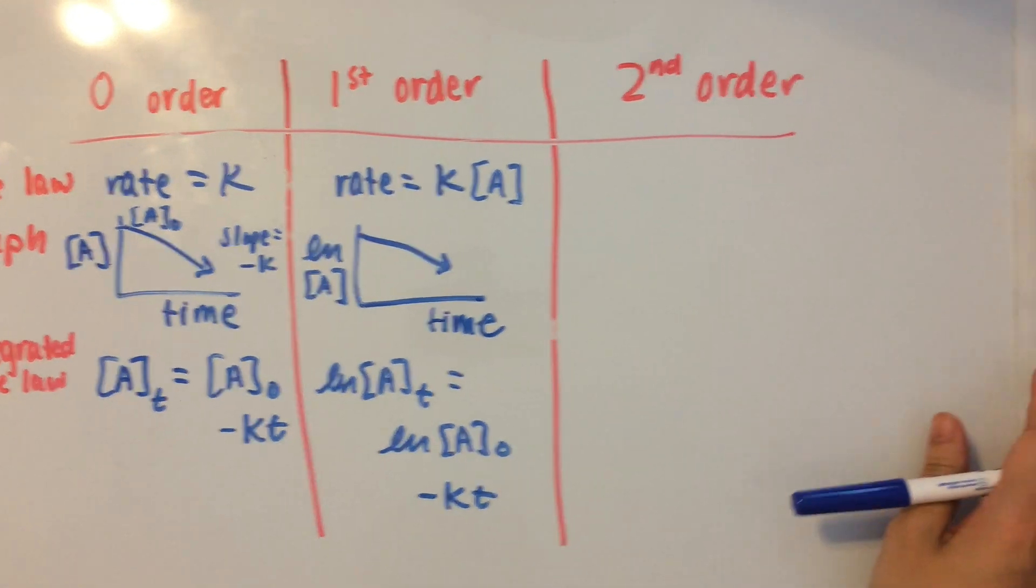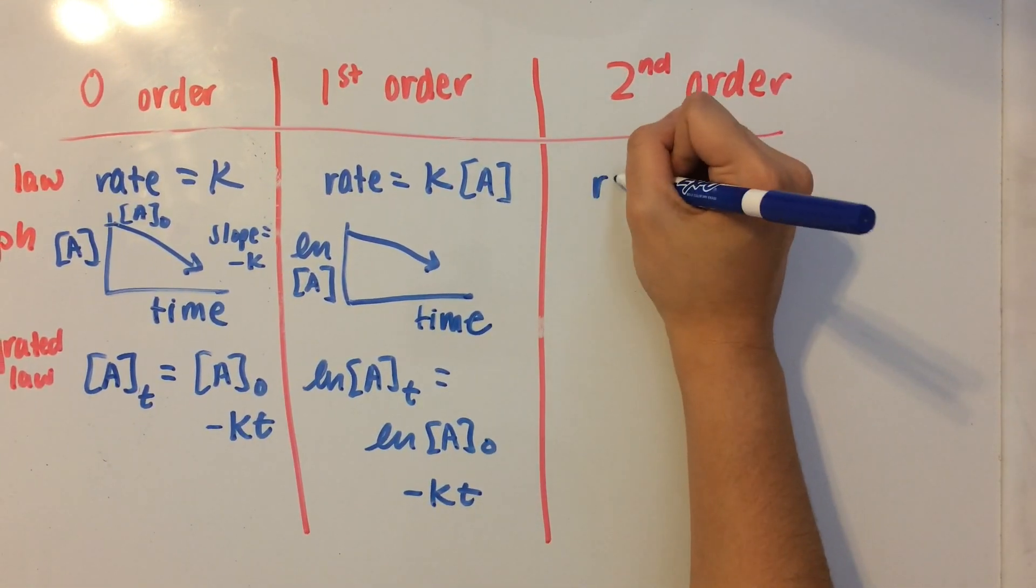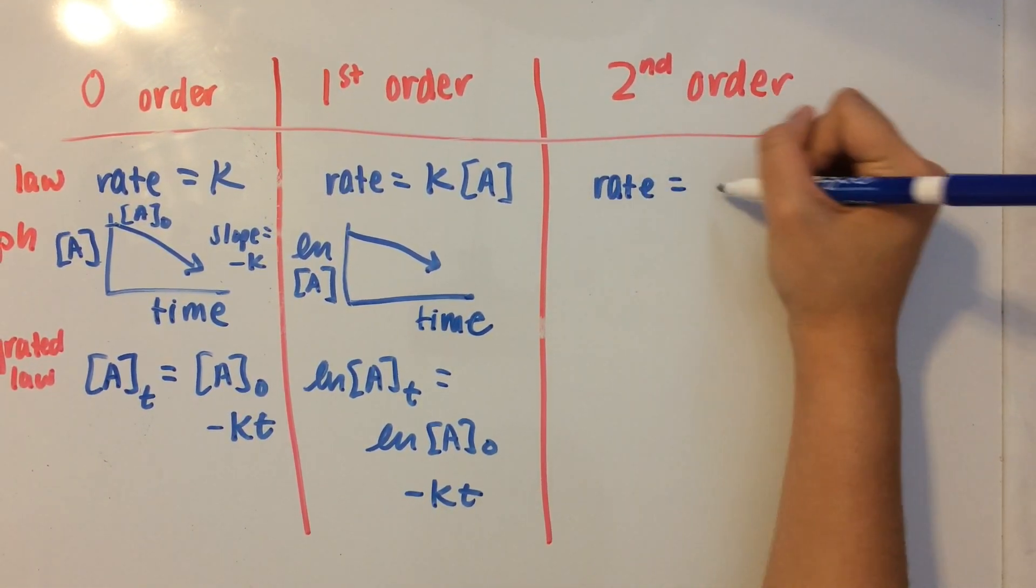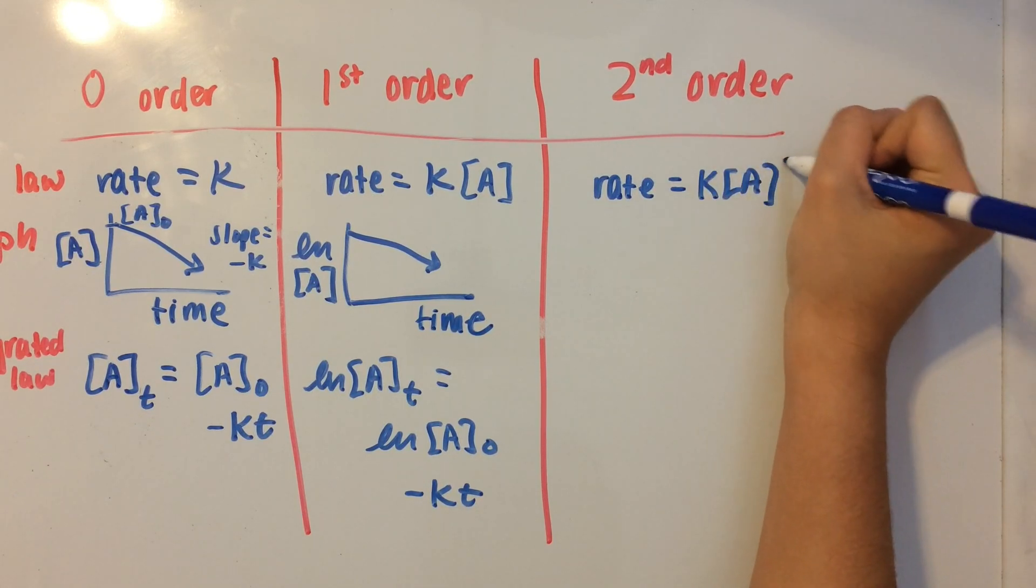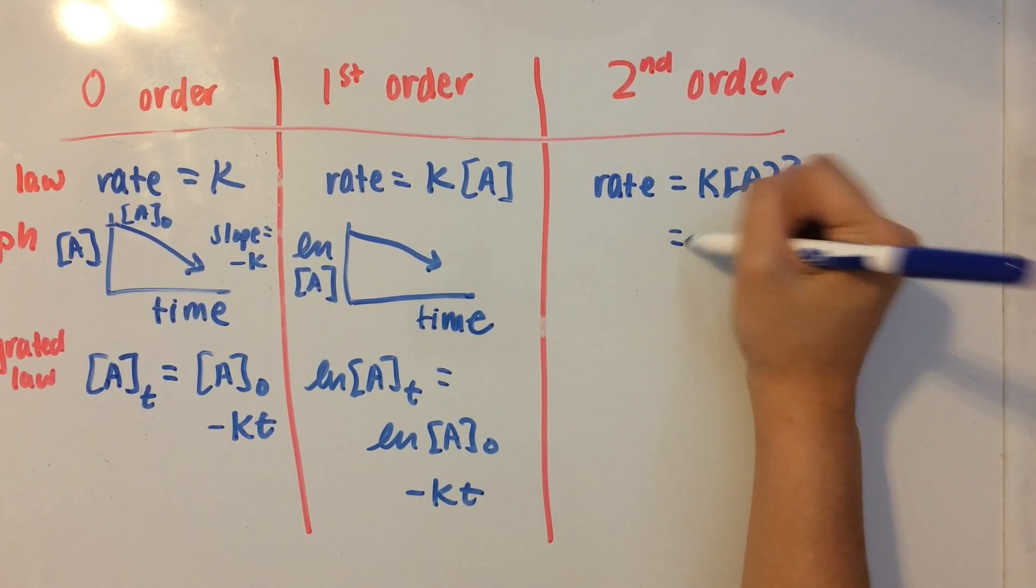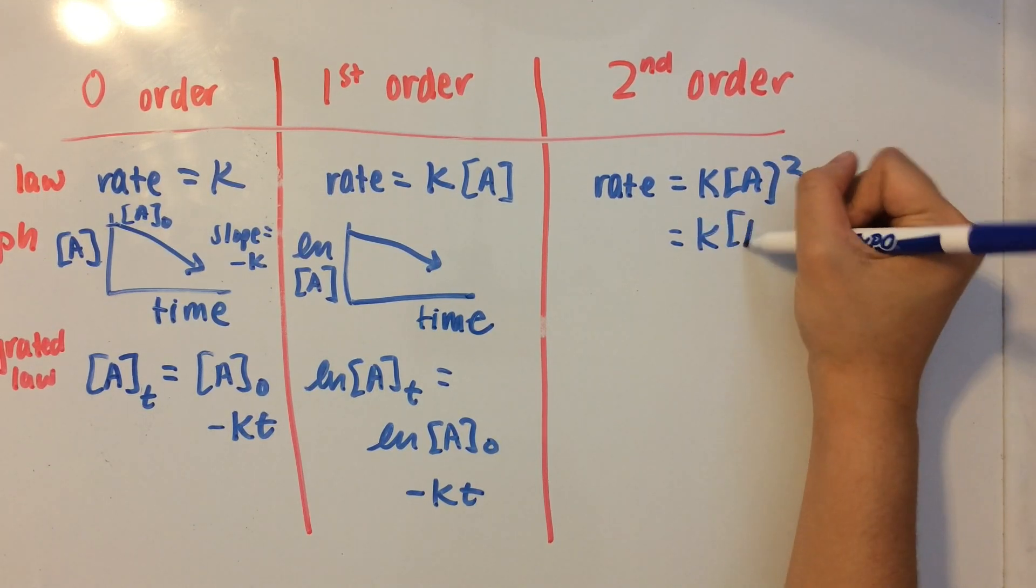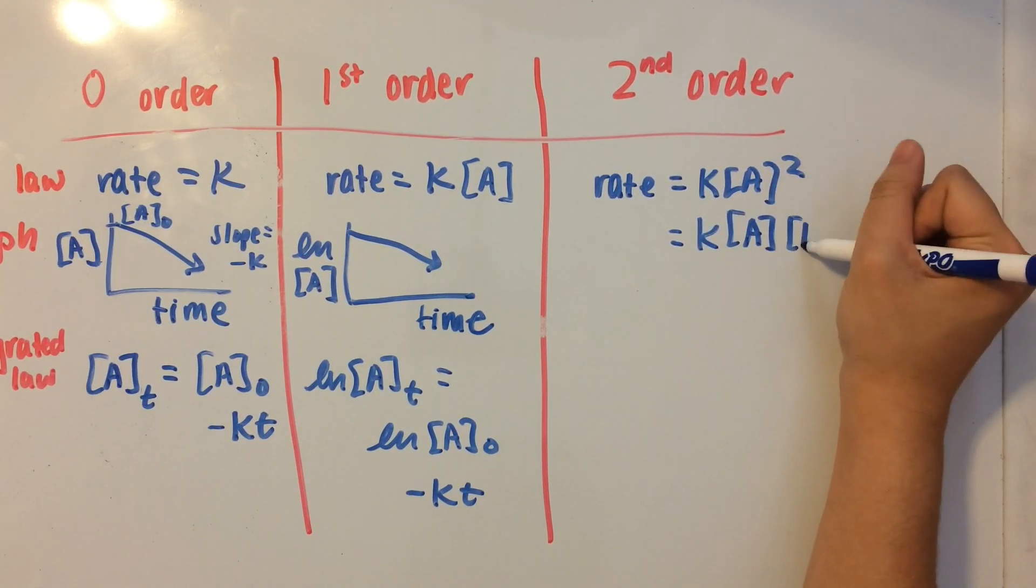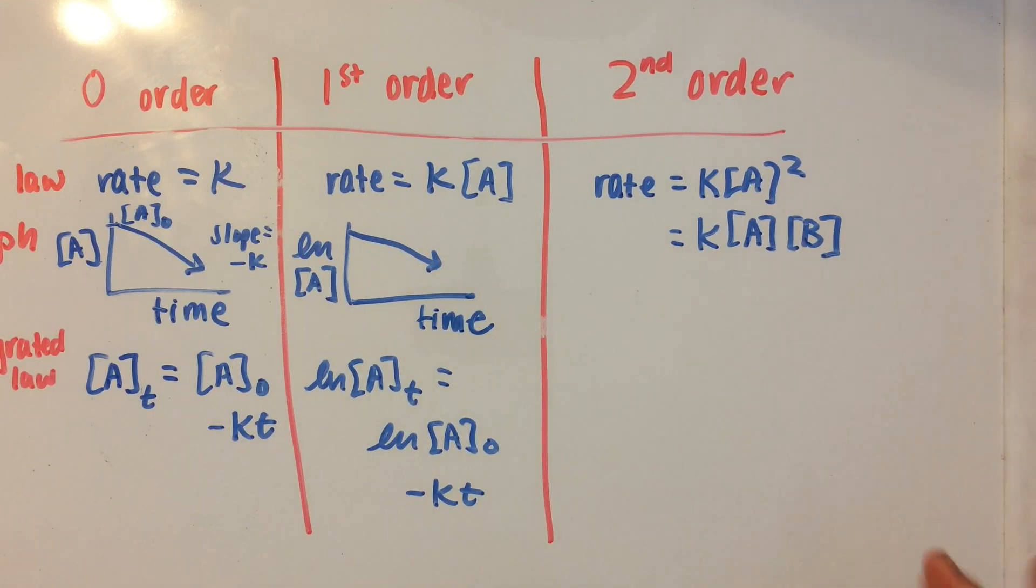So then on to second-order, we have a rate law that can either equal k times concentration of A squared, or k times concentration of A times concentration of another reactant, B.